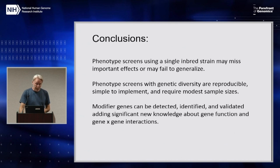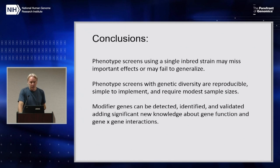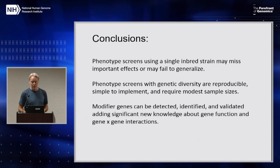So, phenotype screens using single inbred strains may miss important effects or may fail to generalize. Phenotype screens with genetic diversity are reproducible, they're simple, and they require manageable sample sizes. And if you do such a screen, you can then go on to identify modifier genes — you can detect them, identify the genes, and validate them.